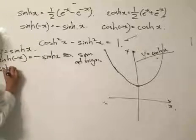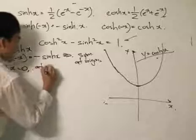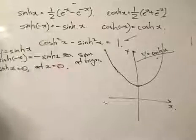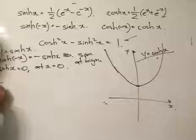We'll put sinh x equals to 0. When x equals to 0, it passes through the origin. And then later we can just differentiate sinh x one time.